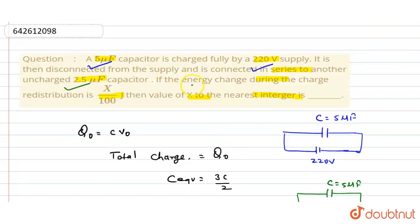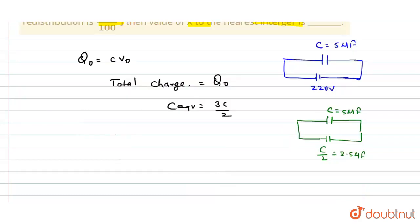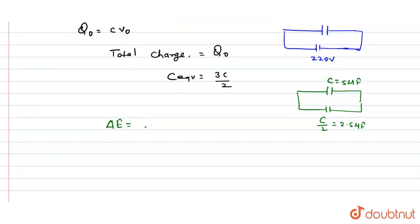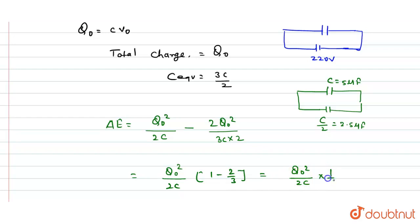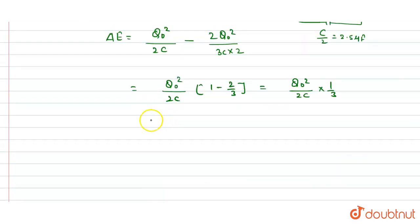We need to find the energy change during charge redistribution, given as x/100 Joules. The energy change ΔE is written as: ΔE = q₀²/2C − 2q₀²/(3C·2). Taking q₀² common, this becomes q₀²/(2C) · (1 − 2/3), which simplifies to q₀²/(2C) · (1/3), giving ΔE = q₀²/(6C).